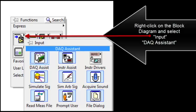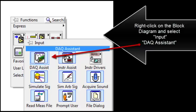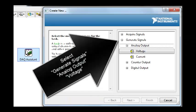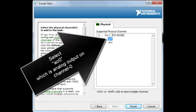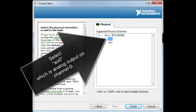Right click on the block diagram and select input and DAQ assistant. Select generate signals, analog output, voltage. Select AO0 which is analog output on channel 0. Then finish.